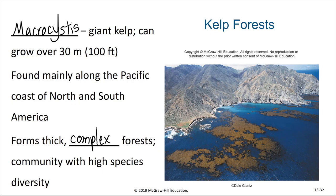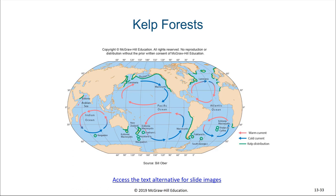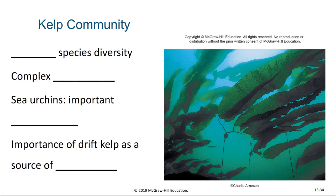Kelp requires cold waters and so we will find these kelp where there are cold surface currents in the oceans. There is high species diversity within the kelp community and there is complex zonation, much as you would see in a terrestrial forest, with different organisms living on the bottom or up in the canopy or even on the growing structures themselves.